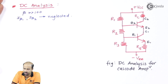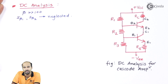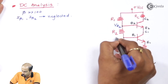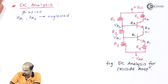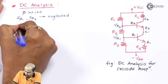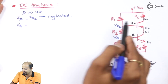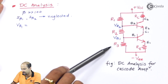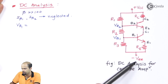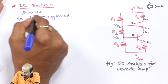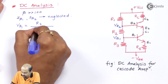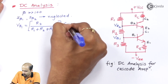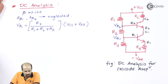If we neglect IB1 and IB2, we can easily get the values of VB1 and VB2. The value at the first node is VB1. Applying the voltage divider rule, VB1 is equal to R3 divided by R1 plus R2 plus R3, multiplied by the total voltage VCC plus VEE.